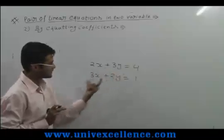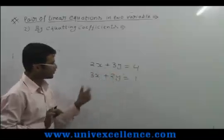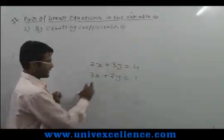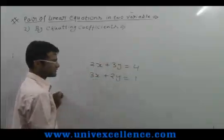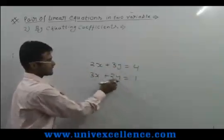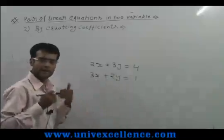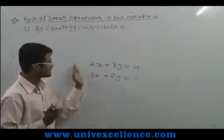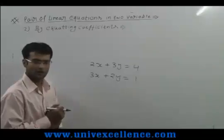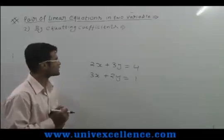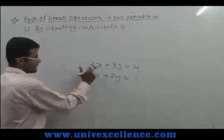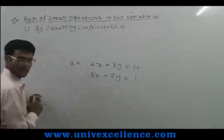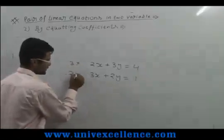As we can see in this equation, no coefficient of any variable is equal. Here x has the coefficient 2 and here x coefficient is 3; here y coefficient is 3 and y coefficient is 2 — not equal. Now we have to perform an activity so that these may be equal. If we multiply this equation by 3 and multiply this equation by 2...